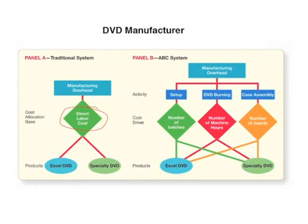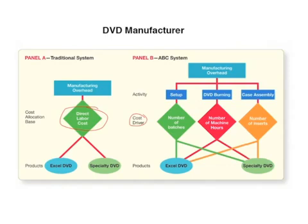In this case each product went through each activity, though sometimes one product may go through two activities while another goes through three. We also have a cost driver for each activity, and the cost driver does not necessarily have to be the same for each activity. For setups, the cost driver is number of batches; for DVD burning, it's number of machine hours; and for case assembly, it's the number of inserts.